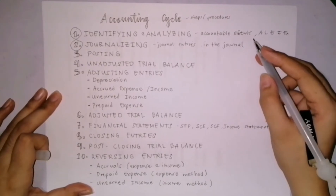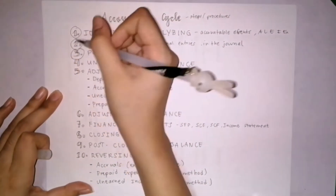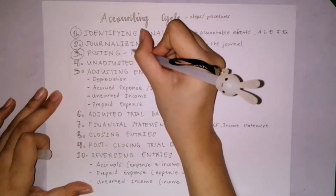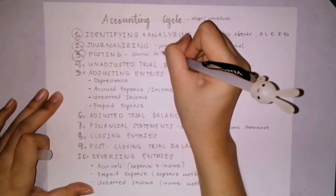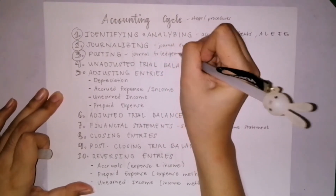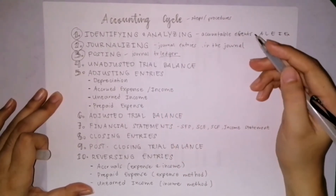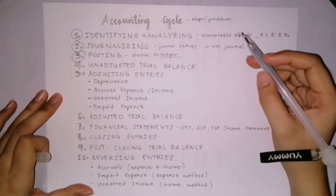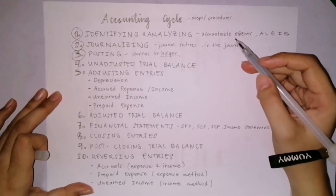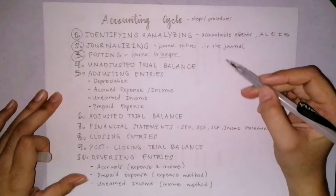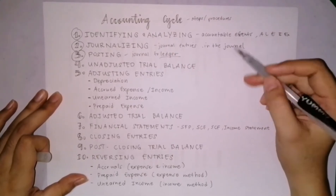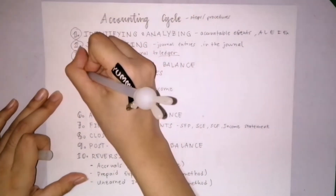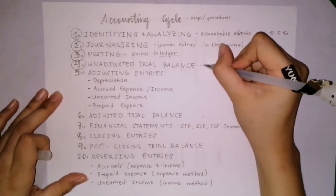After journalizing the transactions, we go to Step 3: posting. Whatever we recorded in the journal, we transfer it to the ledger account. The process of transferring data from the journal to the ledger is called posting. In the ledger, there is a classification or grouping of similar accounts. For example, if there are several journal entries about cash, when you post to the ledger, all cash accounts are grouped together.